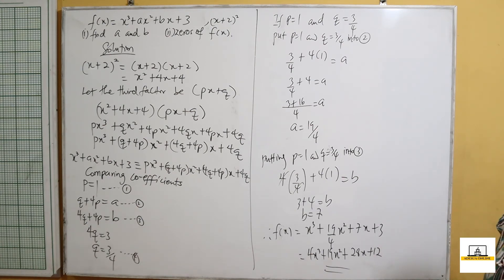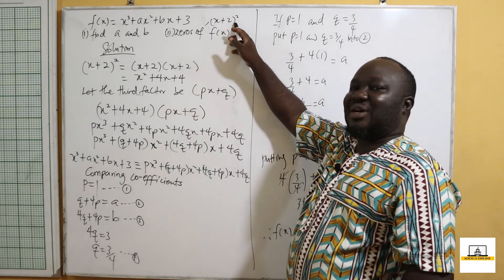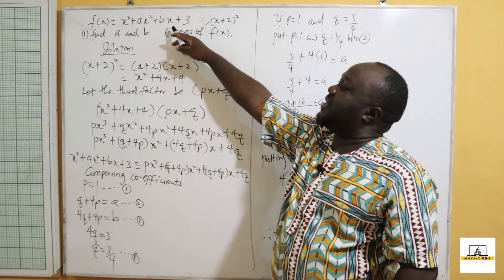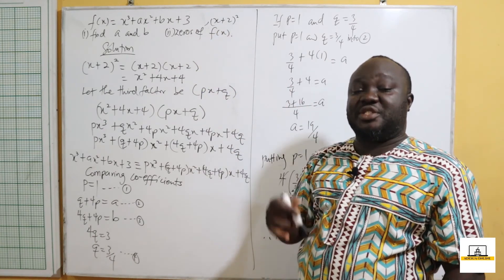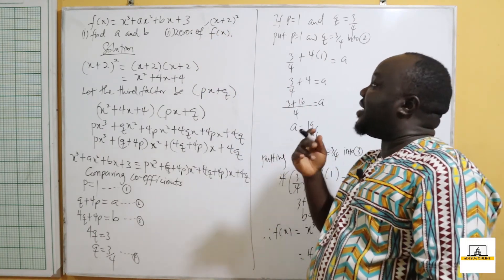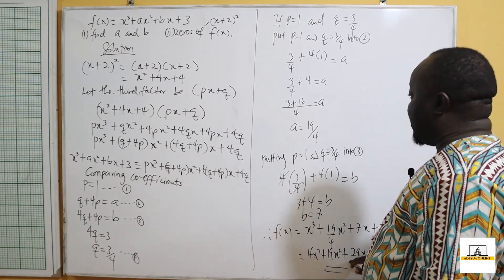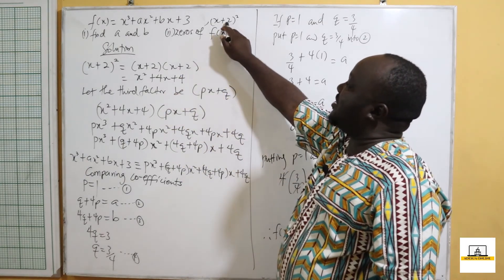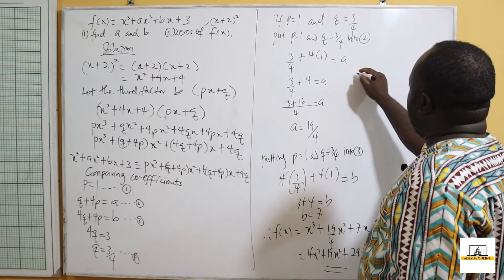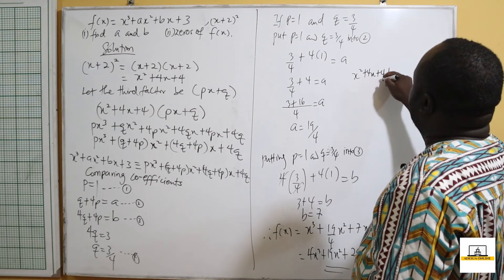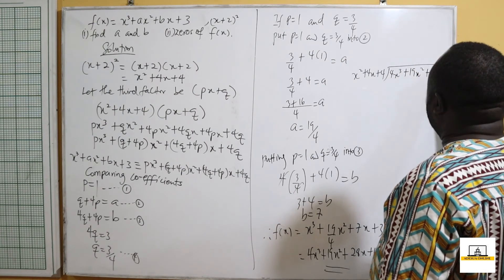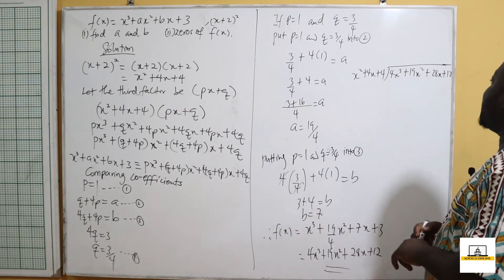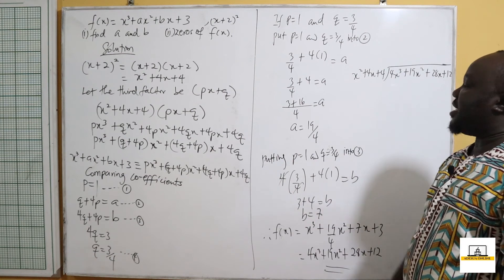Now we are asked to find the zeros of f(x). Because (x+2)² was given as a factor, we divide 4x cubed plus 19x squared plus 28x plus 12 by x squared plus 4x plus 4, which is the expansion of (x+2)², and we shall get a remainder of 0 confirming it is a factor. This will give us the third factor.